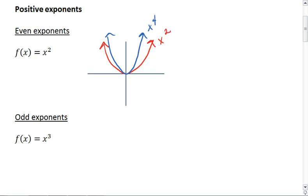And that x to the 6th is even skinnier. But that all even positive exponents have this parabola look to them.